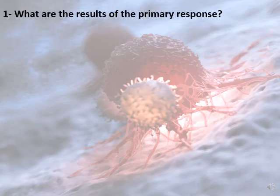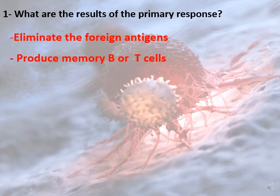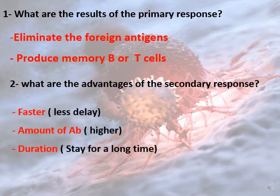The results of the primary immune response are: eliminating the foreign antigens and producing memory B and T cells. For example, the first time you get a flu virus it takes about seven to eight days to eliminate it, while upon a second encounter with the same virus it takes only three to four days. The advantages of the secondary immune response are: shorter latency, high amount of antibodies, and longer duration of protection.